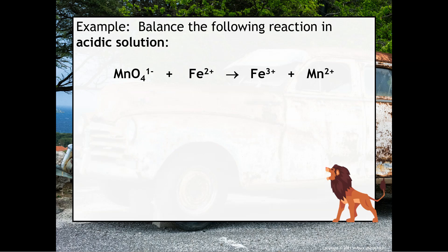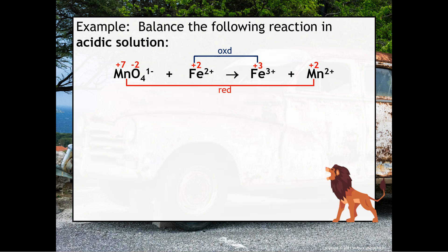Here's an example — we're going to balance this redox reaction in acidic solution. Just like usual, we'll assign our oxidation numbers. Notice that iron goes from 2+ to 3+, indicating a loss of electrons, so it's oxidized. Manganese goes from +7 to +2, indicating a gain of electrons, so it's reduced.